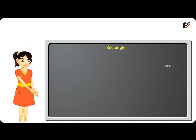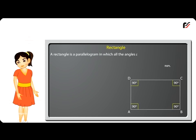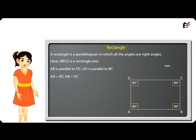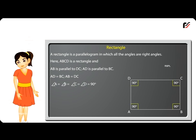Rectangle: A rectangle is a parallelogram in which all the angles are right angles. Here, ABCD is a rectangle where AB is parallel to DC, AD is parallel to BC, AD = BC, AB = DC, and angle A = angle B = angle C = angle D = 90 degrees.